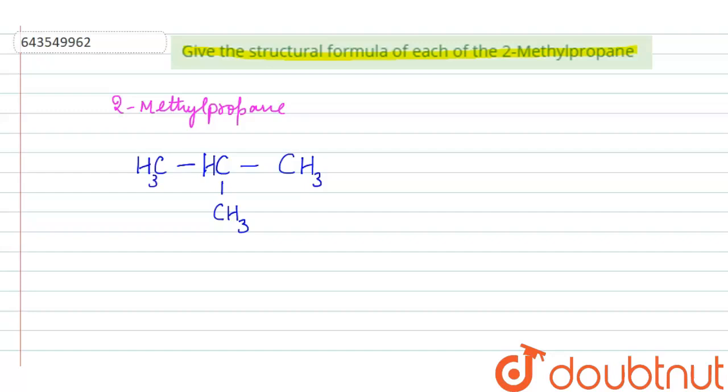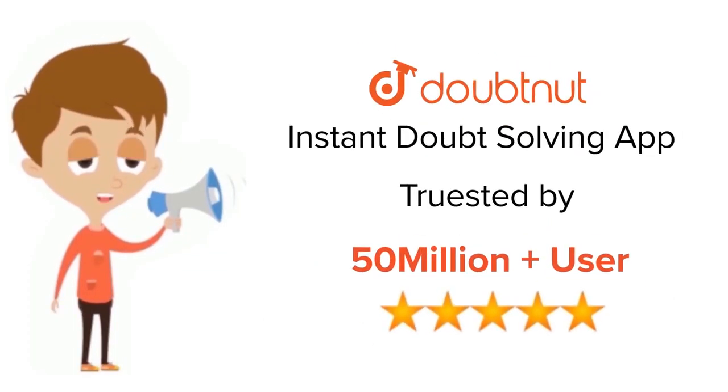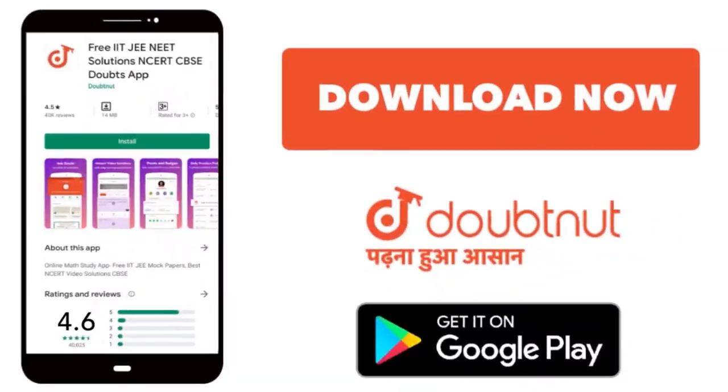and three. So this is 2-methylpropane. This is the required answer. Thank you. For classes 6 to 12, IIT-JEE and NEET level, trusted by more than 5 crore students, download Doubtnet today.